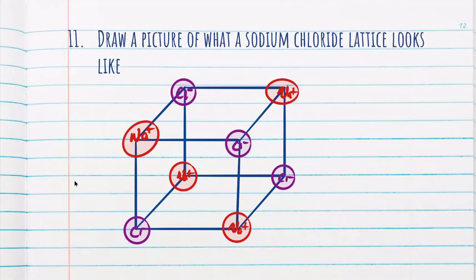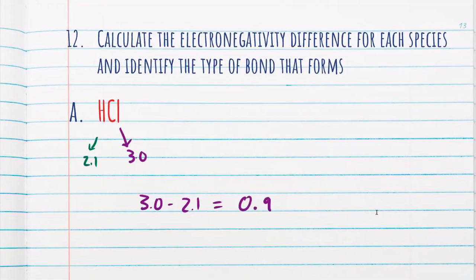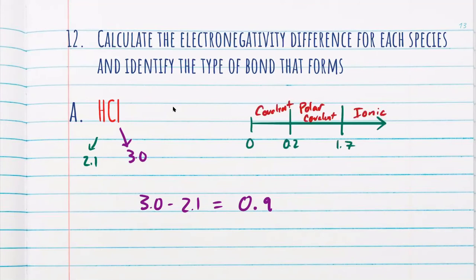Now let's calculate some bonds. First up, we have hydrochloric acid (HCl). Hydrogen has an electronegativity of 2.1, and chlorine has an electronegativity of 3.0. When we find the difference — 3.0 minus 2.1 — we get a difference of 0.9. Looking at our chart, 0.9 lands us at polar covalent, so the type of bond formed is a polar covalent bond.